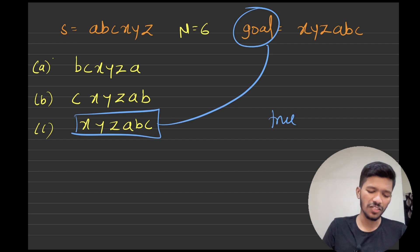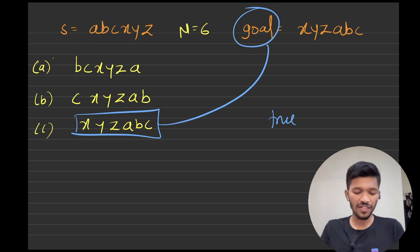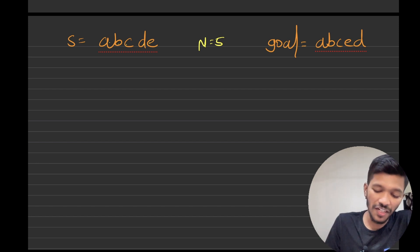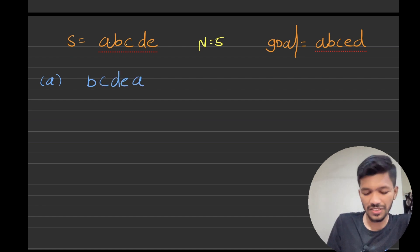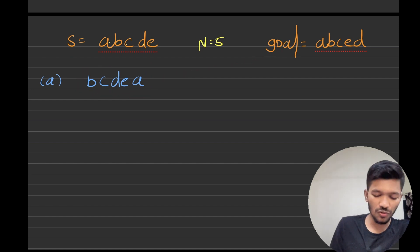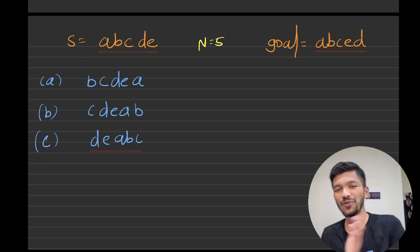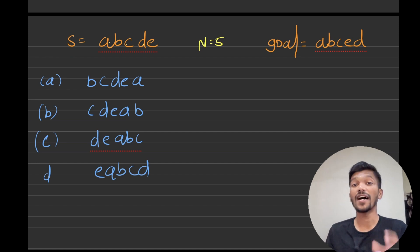Now the big question is: what if string s cannot be converted into goal? How many times do we need to shift? Let's check with another example. I move 'a' to the right: c b c d e a. Not equal to goal. I move 'b': c d e a b. Not equal. I move 'c': d e a b c. Not equal. I move 'd': e a b c d. Not equal to goal either.